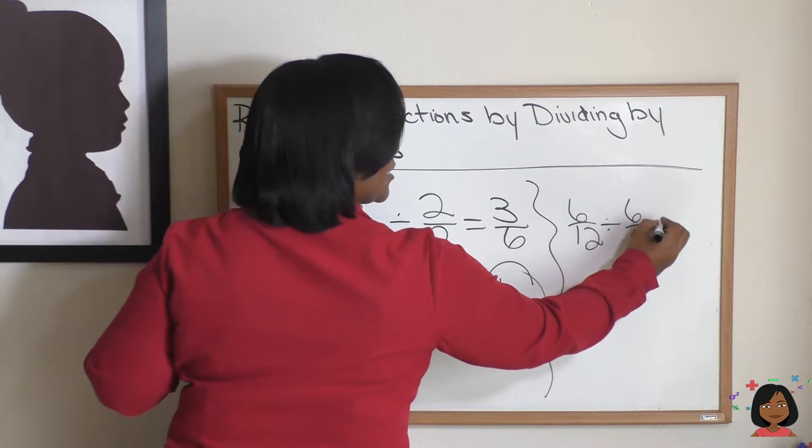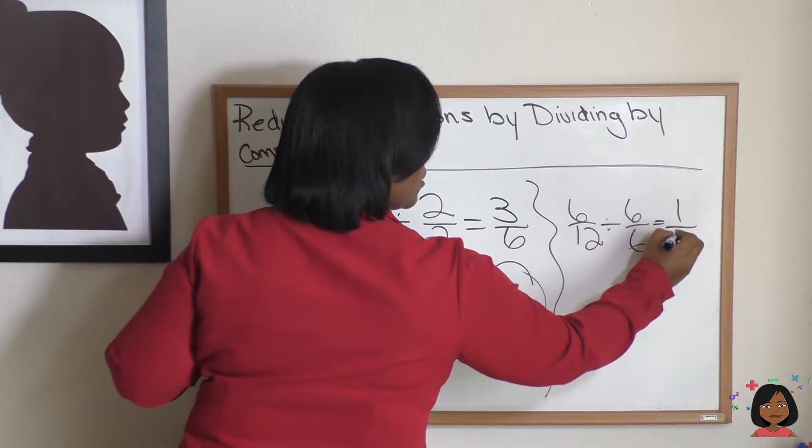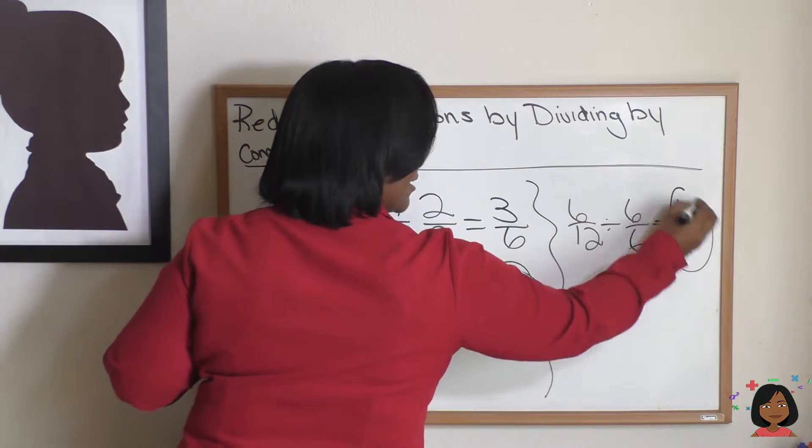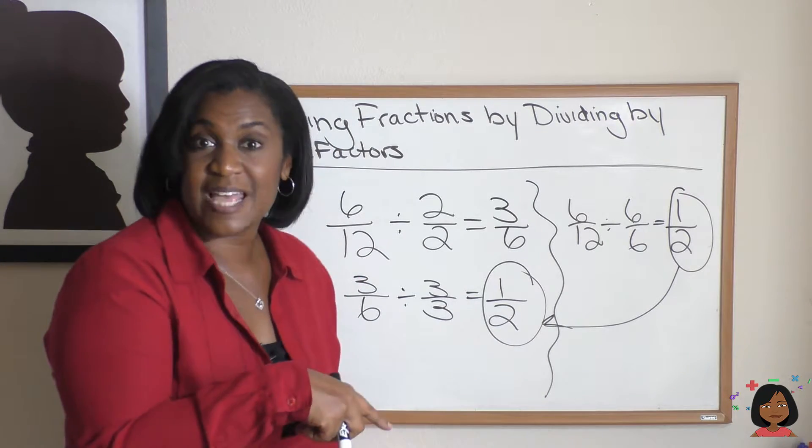6 divided by 6 equals 1. 12 divided by 6 equals 2. And look at that. It gives us the same answer, but we did it in one step instead of 2.